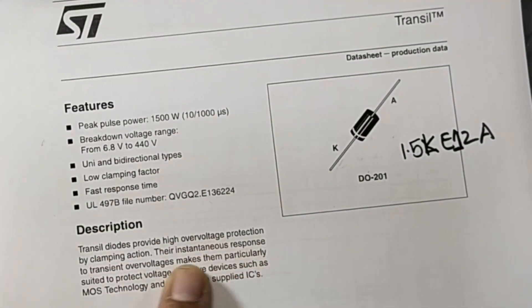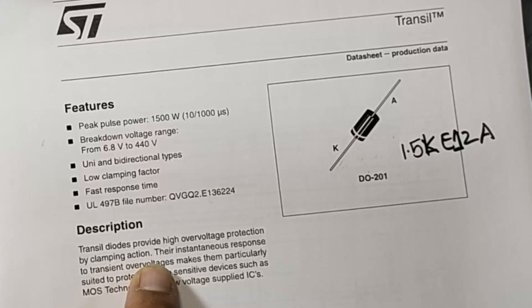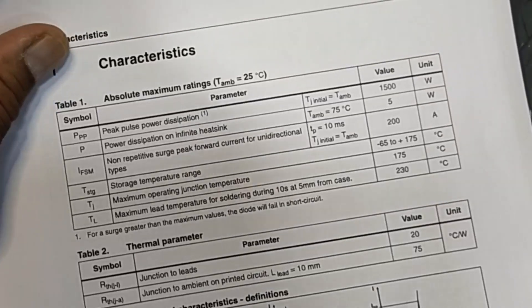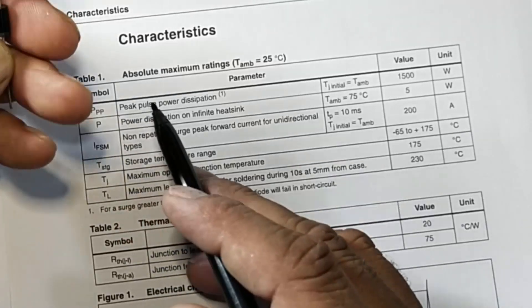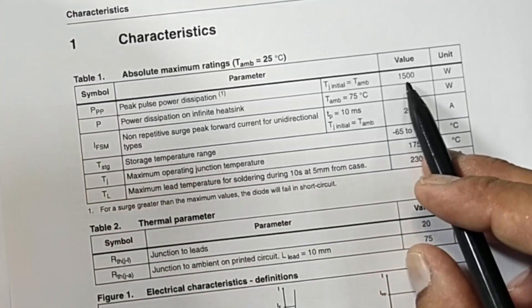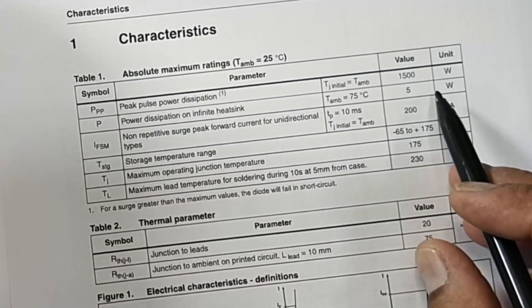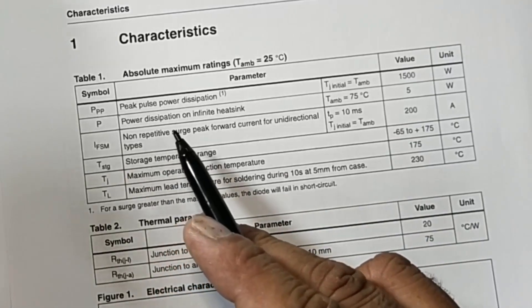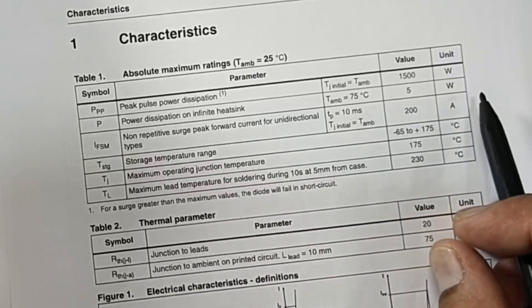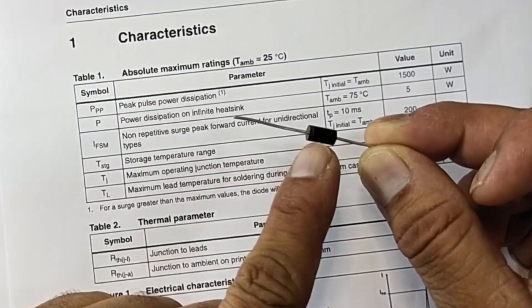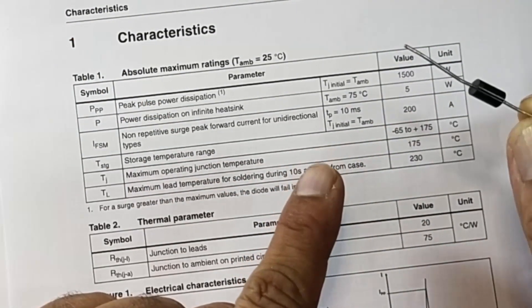So TVS diode provides high over-voltage protection by clamping action. It has different definitions here. PPP - Peak Pulse Power dissipation - so it has 1500 watts. Power dissipation on infinite heatsink, that is 5 watt. If it is used for normal regulation it will regulate up to 5 watt.